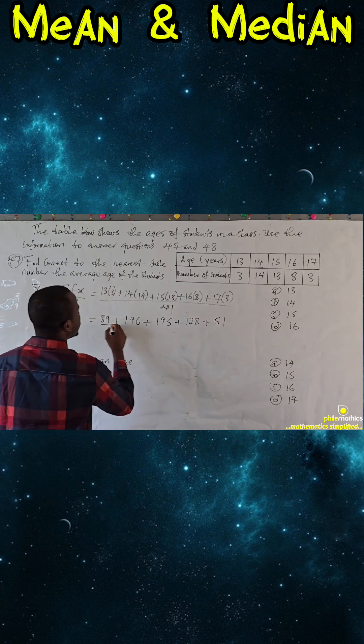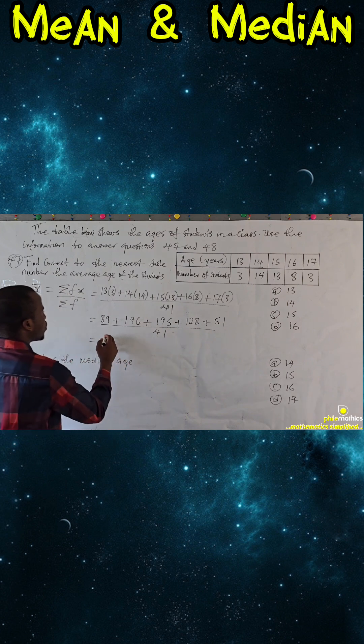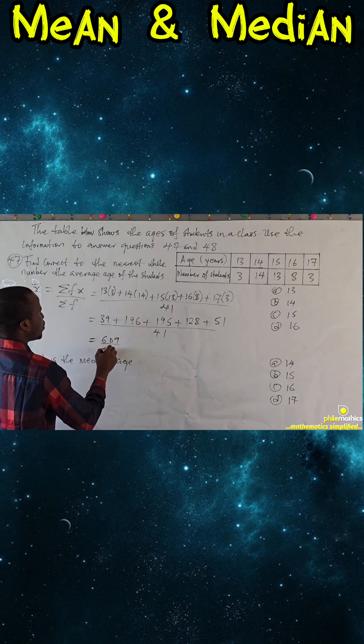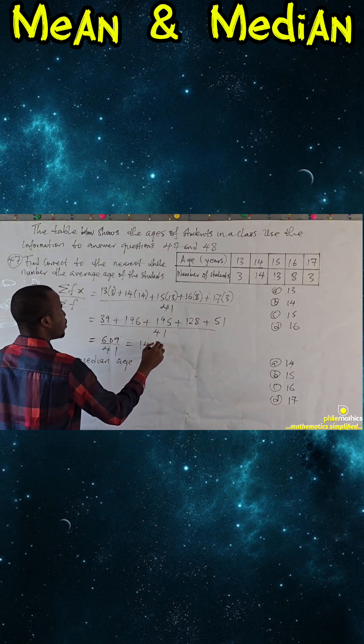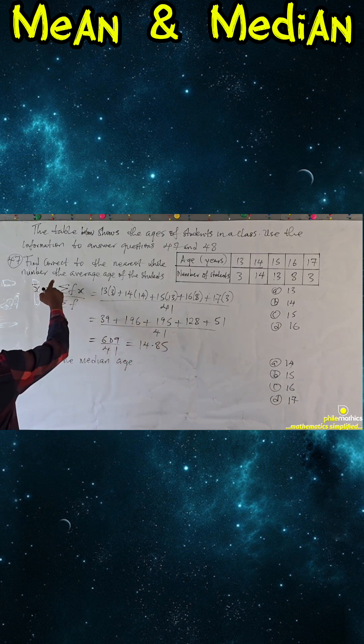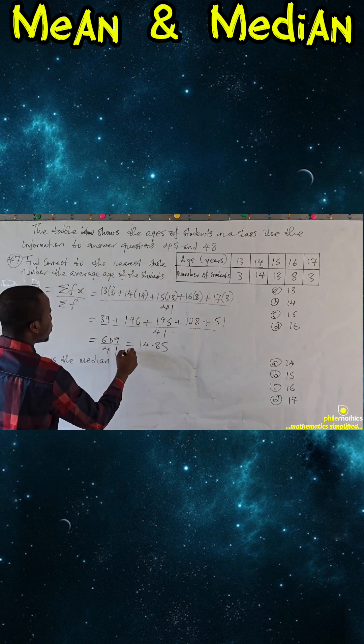We divide this over 41. If we sum this, this will give us 609 over 41. If we divide this, we will get 14.85. We are asked to approximate it to the nearest whole number.